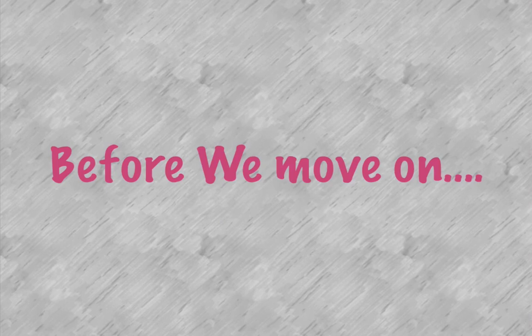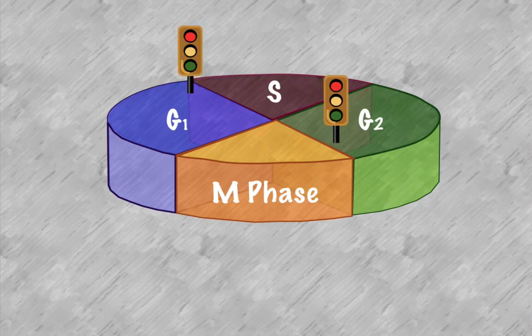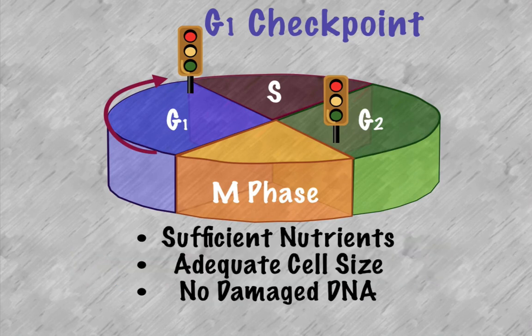Before we continue on, let's back it up just a little bit because I want to talk about another aspect of this process. This process has various checkpoints. I have two shown here. We're just going to keep it at a more simpler stage. At the G1 checkpoint, the cell is going to check if there's sufficient nutrients.